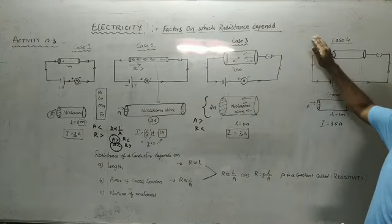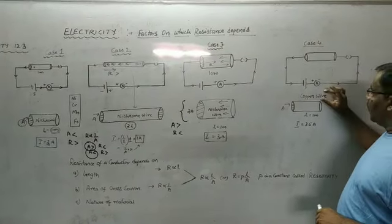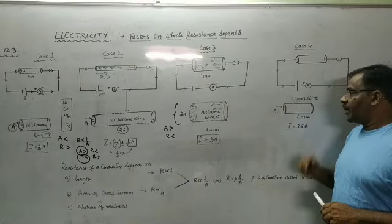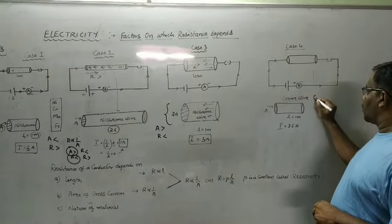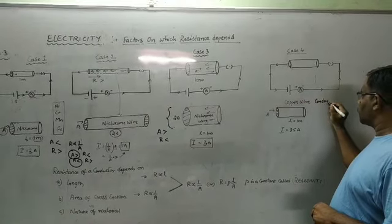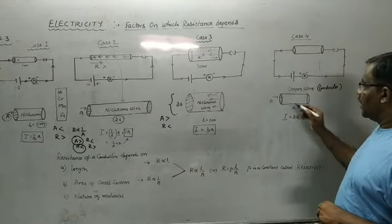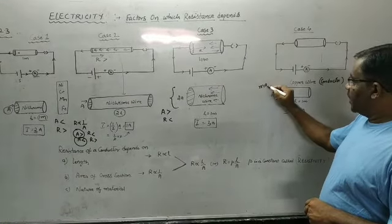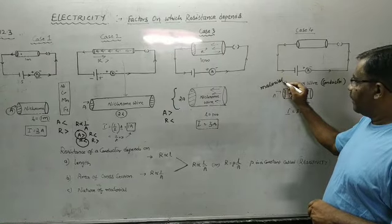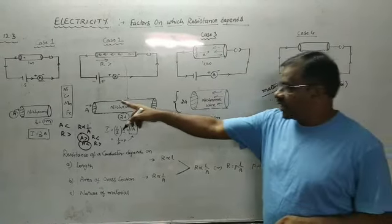In case 4, instead of taking a nichrome wire, we take a copper wire. We know that copper is a good conductor, and a good conductor always offers less resistance to the flow of current. In case 1 we have a nichrome wire of 1 meter, and here we have a copper wire of 1 meter.